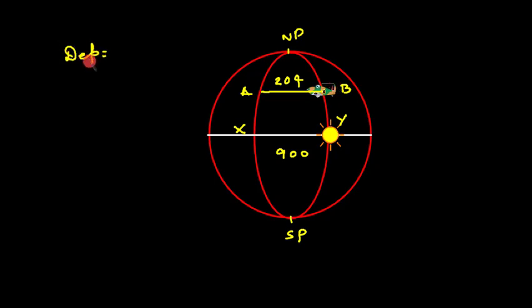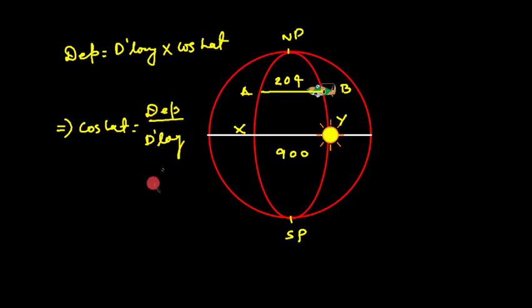We know the formula: departure equals d'long times cosine of latitude. This way, cosine latitude equals departure upon d'long. The departure is 204 and d'long is 900. That way, I'll get the latitude.